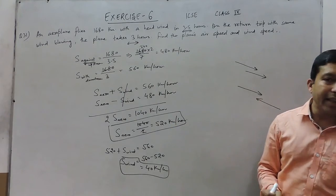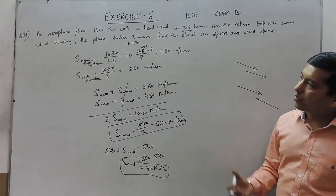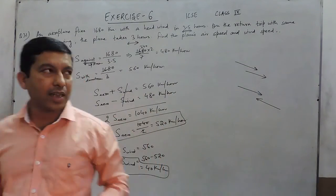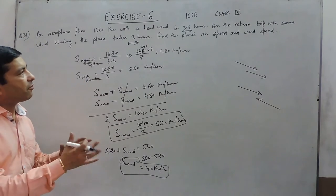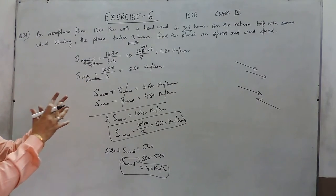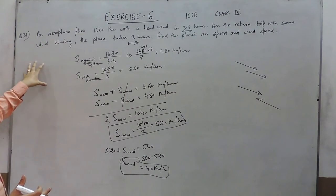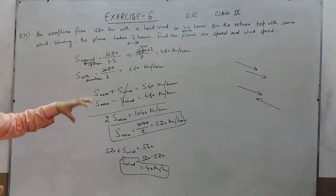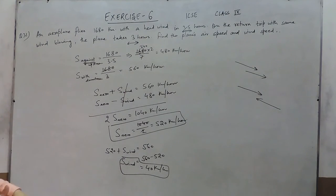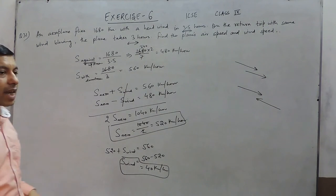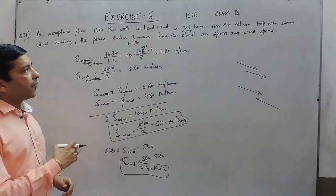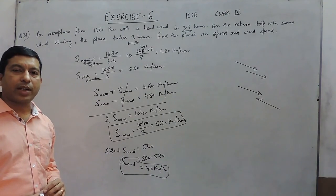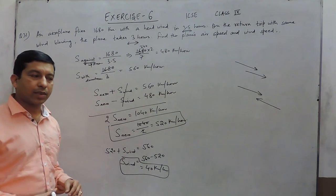This is exactly the same kind of question as we did in question number 29 and 30. The only difference is that there it was boats and stream, and here it is an aeroplane and wind. In the next class we will talk about question number 32. If you have any problem, you can email or contact us. Thank you.